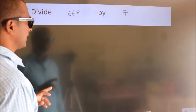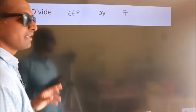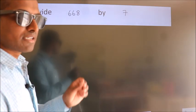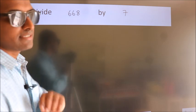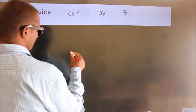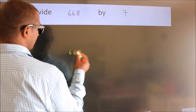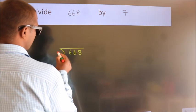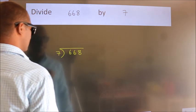Divide 668 by 7. To do this division, we should frame it in this way: 668 here, 7 here. This is your step one.